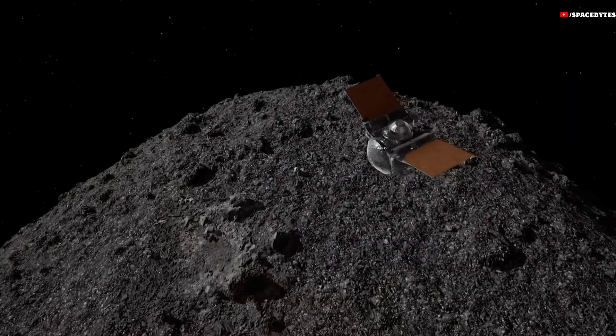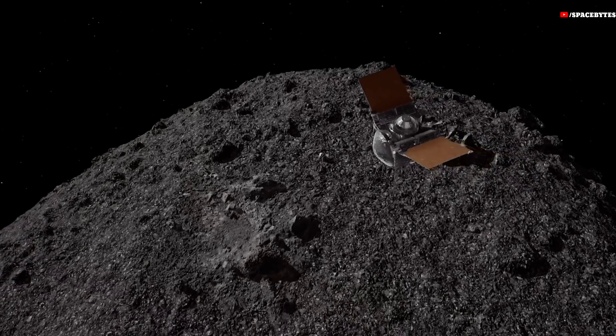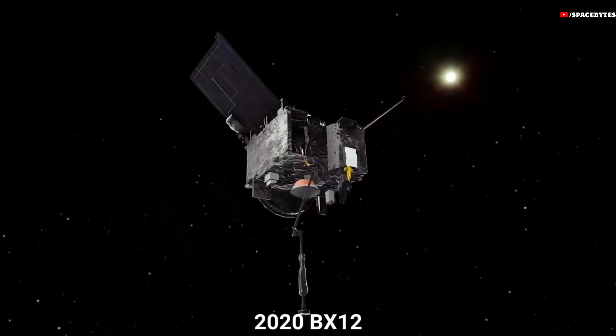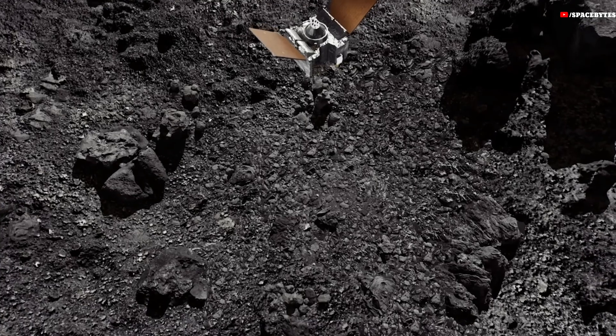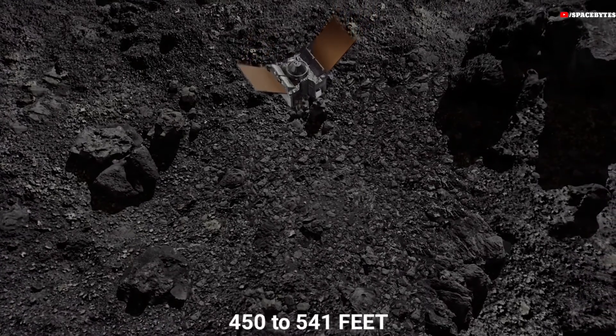Shortly after, on February 16th, another hazardous asteroid named 2020 BX12 will come close to our planet. With an estimated size ranging from 450 to 541 feet, traveling at a speed of 16.5 km per second.